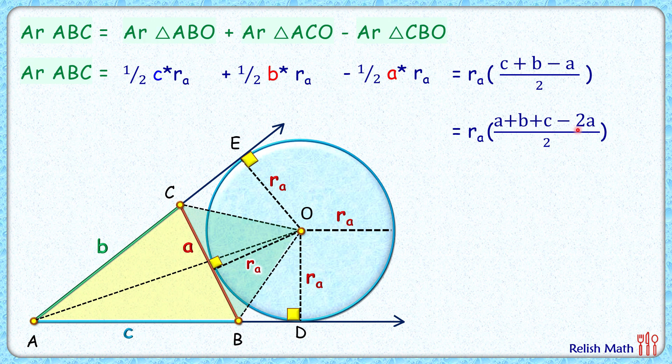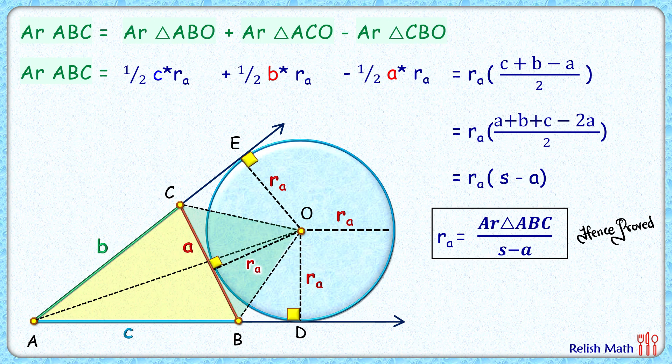And 2a divided by 2 is a. So we're getting it as ra times s minus a. Now the radius of this excircle is nothing but the area of triangle ABC divided by s minus a. That's what we had to prove, and hence proved. I hope you enjoyed the solution. I will see you in the next video. Till then, tata, bye bye!